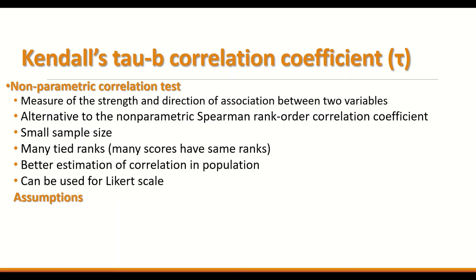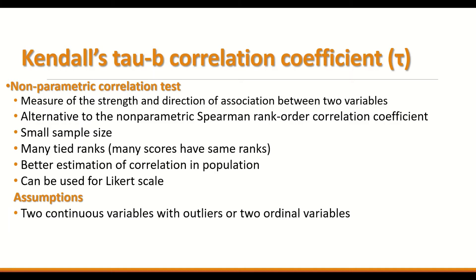To use the test, certain criteria and assumptions must be fulfilled. The first assumption is that the two variables can be either two continuous variables without layers — meaning they are not normally distributed — or two ordinal variables. The relationship between variables does not have to be linear; it is a monotonic relationship.